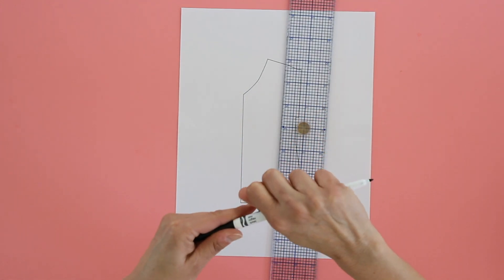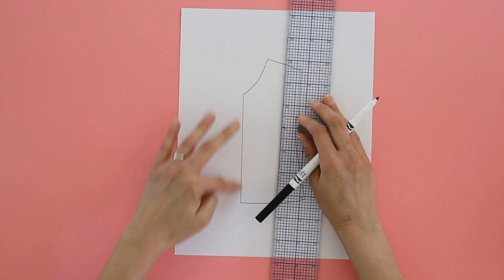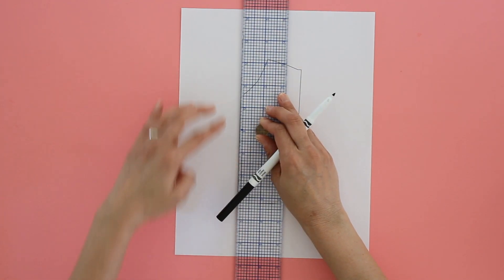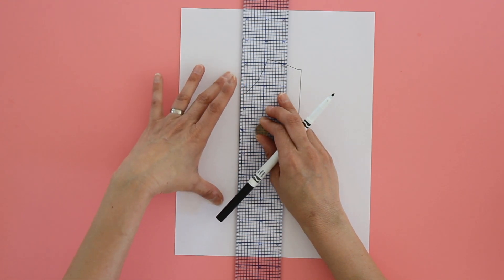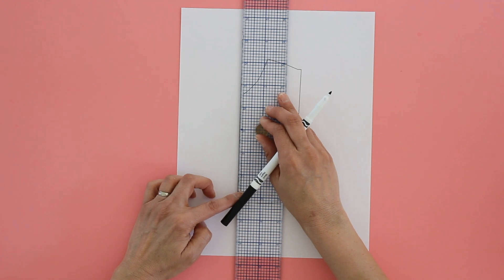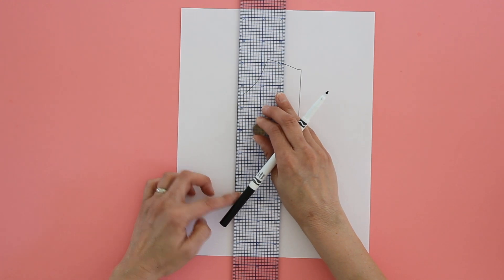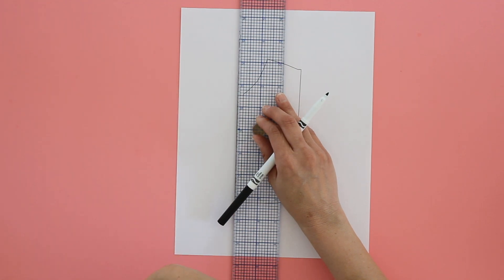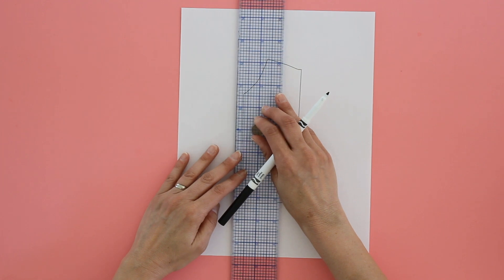So the first thing you want to do is determine, because this is cut on a fold, you want to add a seam allowance. Okay, so we'll pretend that's a seam allowance there because this is a quarter scale model that I'm working with. And then you need to also determine the amount of overlap that you're going to want in the front of the shirt. So add the seam allowance plus the amount of overlap you're going to want.